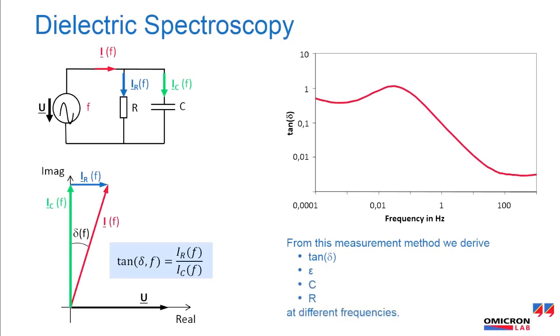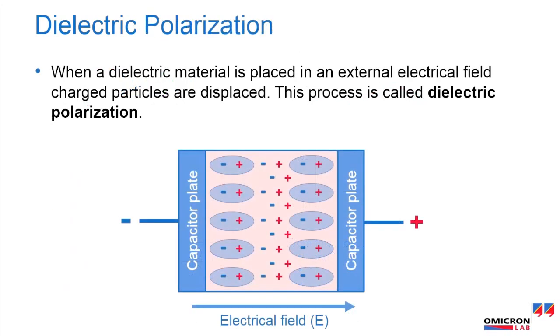Impedance at different frequencies. When a dielectric material is placed in an external electric field, charged particles are displaced. This process is called dielectric polarization.